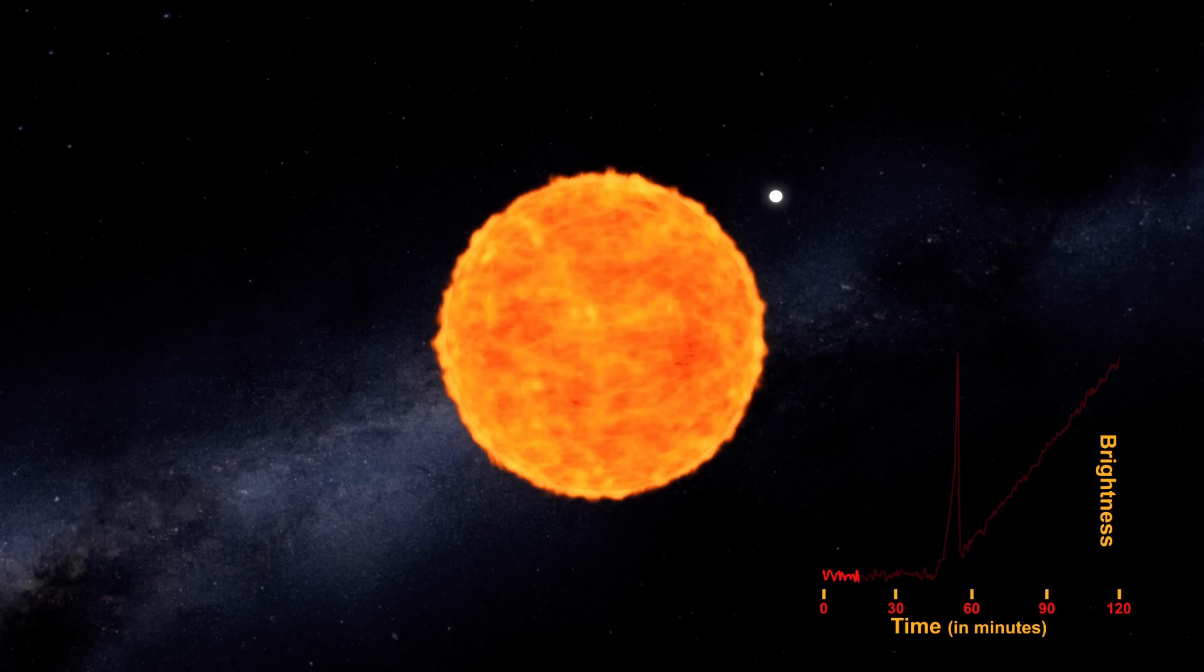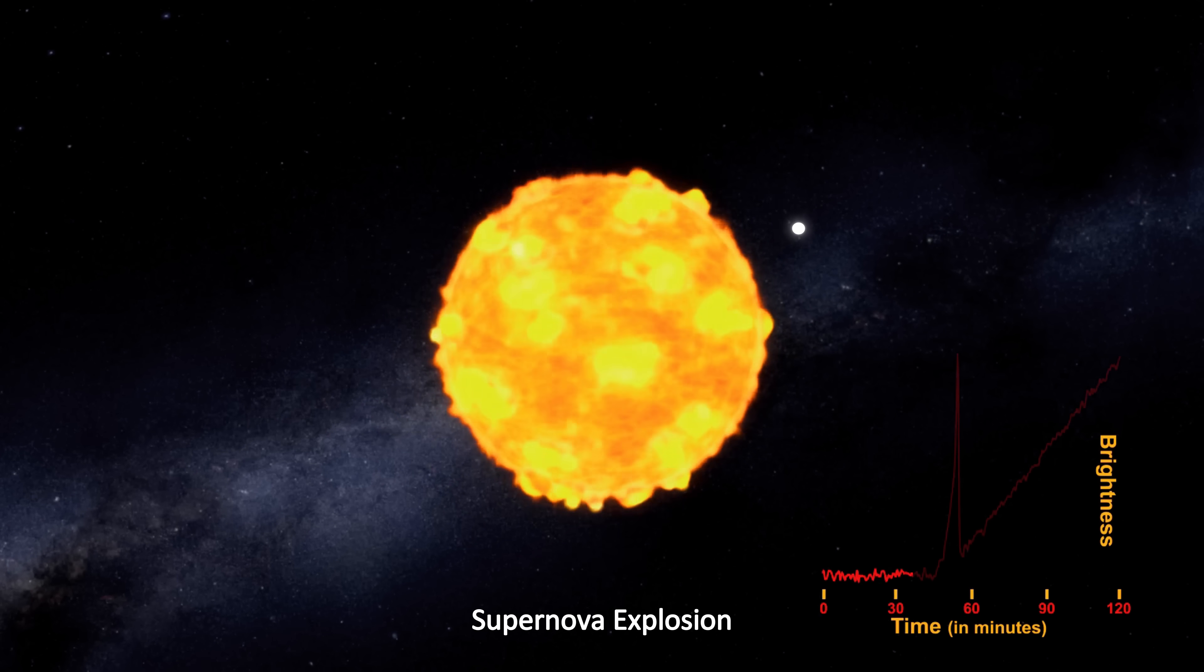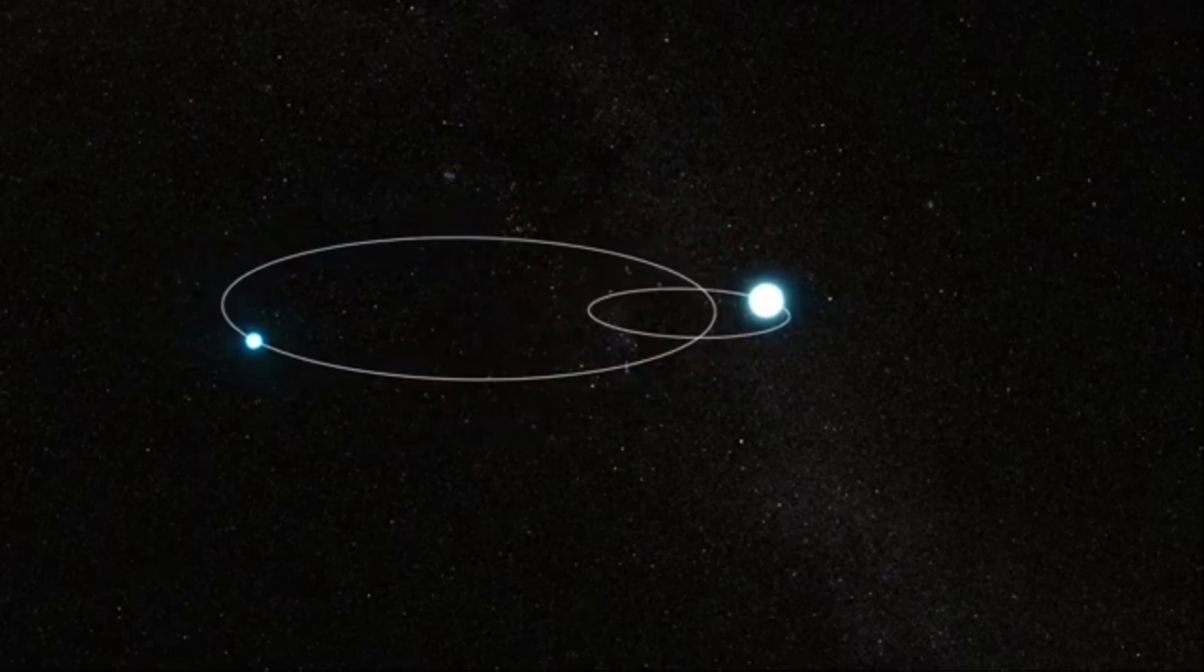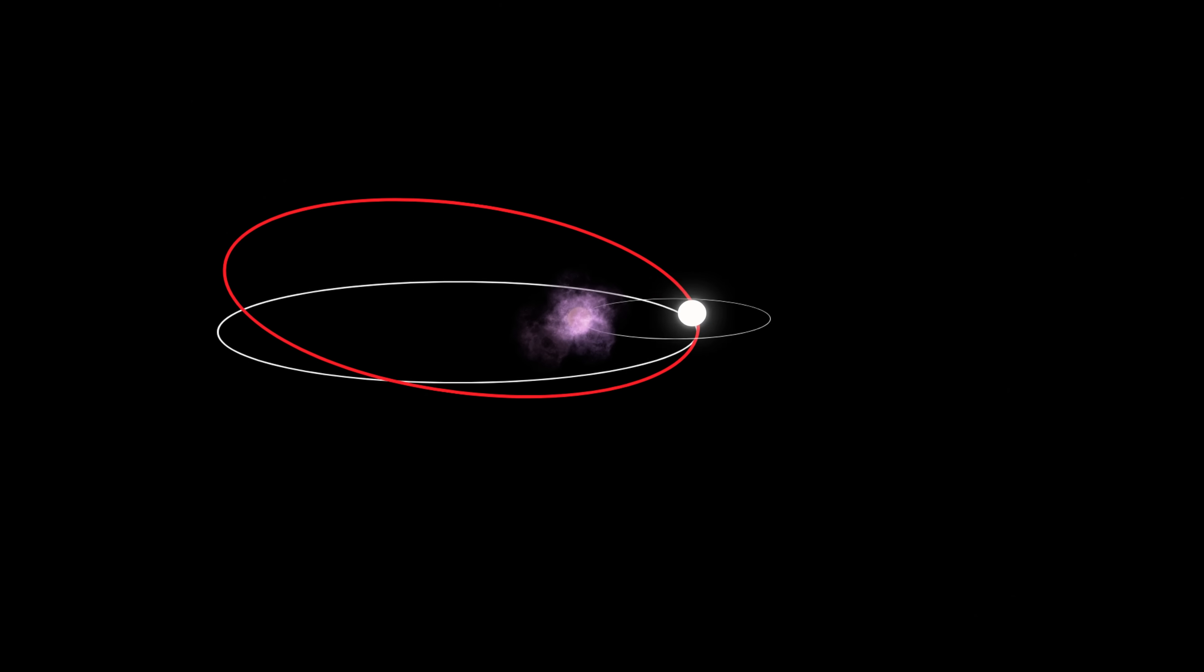Alternatively, Betelgeuse could explode before the companion is fully consumed. This could disrupt the companion's orbit, potentially accelerating its demise or altering its path altogether. So yeah, neither outcome bodes well for the companion star.